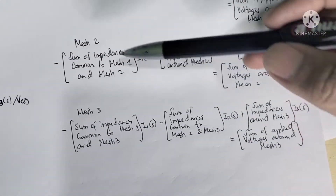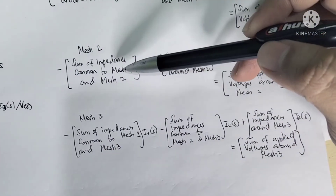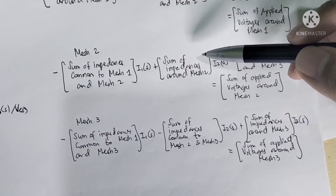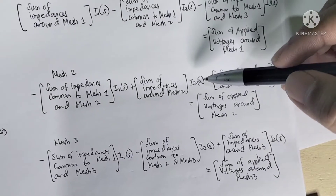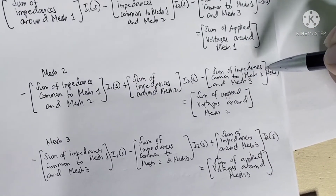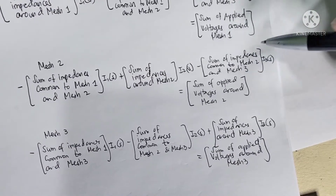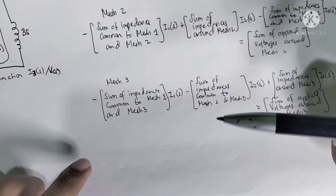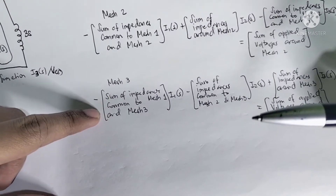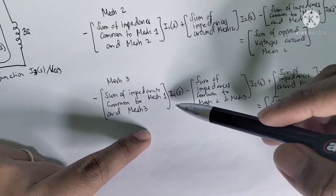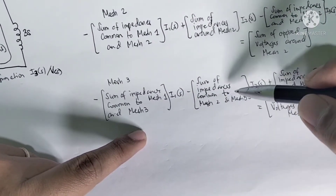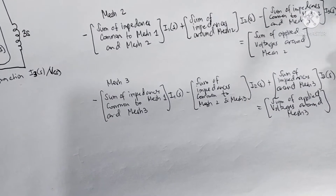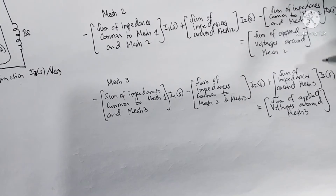This equals the sum of applied voltages around mesh one. For mesh two: minus the impedances common to mesh one and mesh two times I1(s), plus the sum of impedances around mesh two times I2(s), minus the impedances common to mesh two and mesh three times I3(s), equals the sum of applied voltages around mesh two. For mesh three: minus impedances common to mesh one and mesh three times I1, minus common to mesh two and mesh three times I2, plus impedances around mesh three times I3, equals the sum of applied voltages around mesh three.